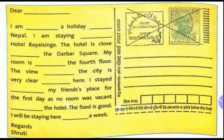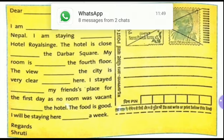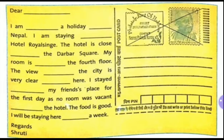Now look at: Dear Mummy and Papa. At first place, you have to write mummy and papa. Next: I am on a holiday to Nepal. I am staying at Hotel Royal Shinge. The hotel is close to the Darbar Square. My room is on the fourth floor. The view of the city is very clear from here.